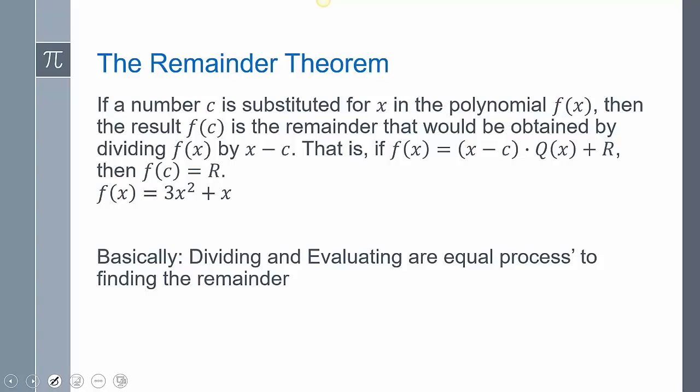The first is the remainder theorem. And what the remainder theorem says is that if you have a number c and it's substituted in for x in some polynomial, that is the same as if you divided by that c as a factor. So if I were dividing by x minus c, like x minus 5, that's the same thing as plugging in 5, and you're going to get the same remainder.